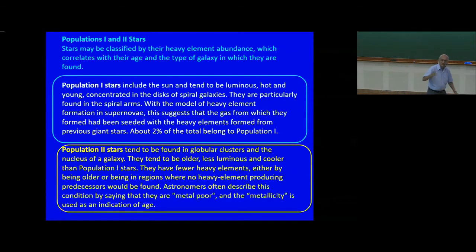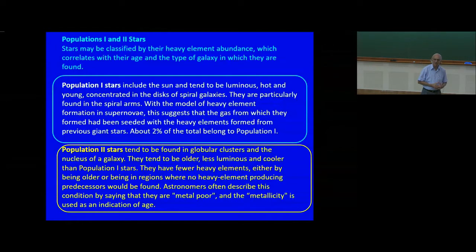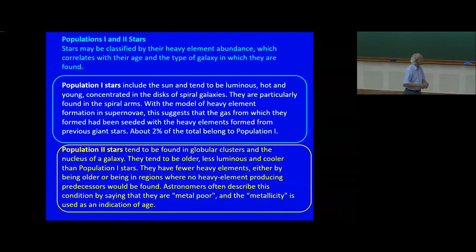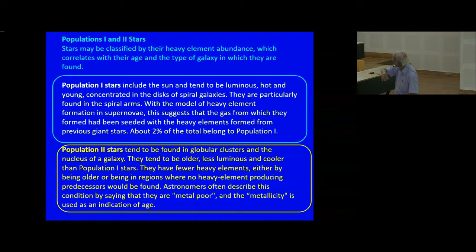Walter Baade studying the Andromeda galaxy made another very important discovery: there are two populations of stars, very imaginatively called Population 1 and Population 2. Population 1 stars include the sun and the more luminous stars — hot, relatively young objects concentrated mainly in the disk and found primarily in the spiral arms of the galaxy.